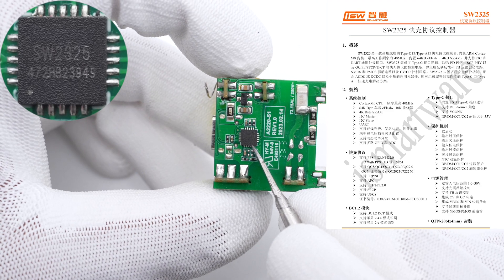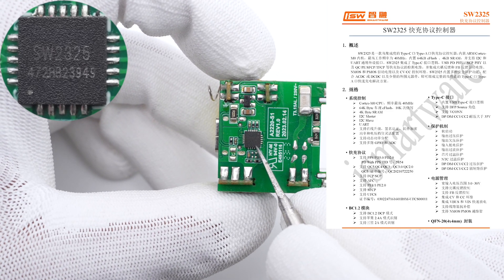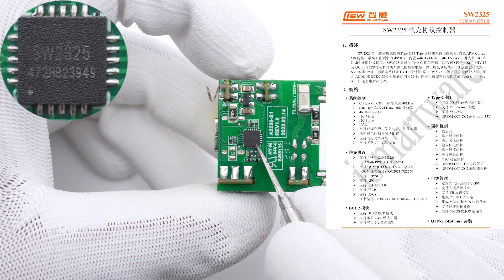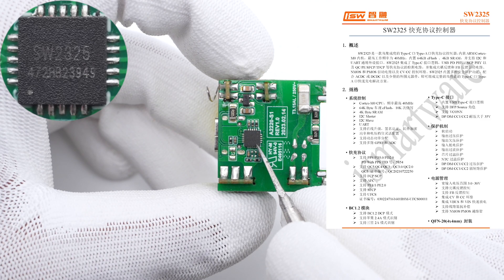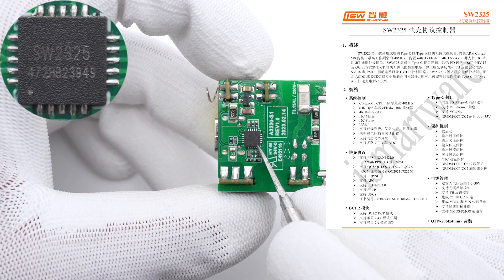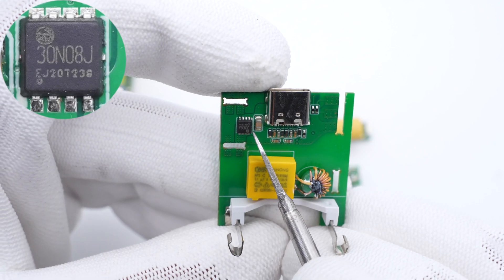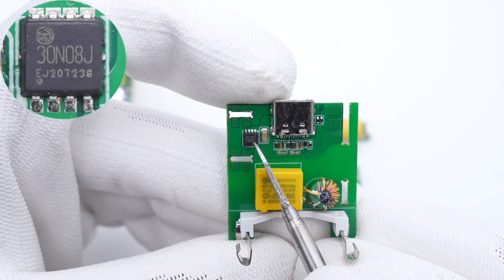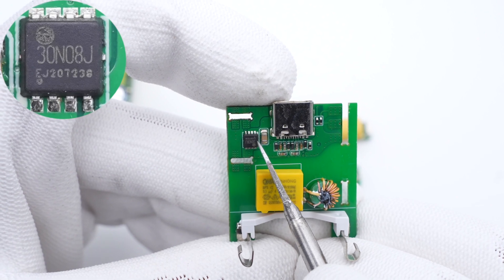The protocol chip is from iSmartWare, which is suitable for fast charging of USB-C, USB-A. It integrates ARM Cortex-M0 core and supports I2C. And the Apple VBus MOSFET is from HRMicro. It adopts DFN 3x3 package, 30V, 7mΩ.